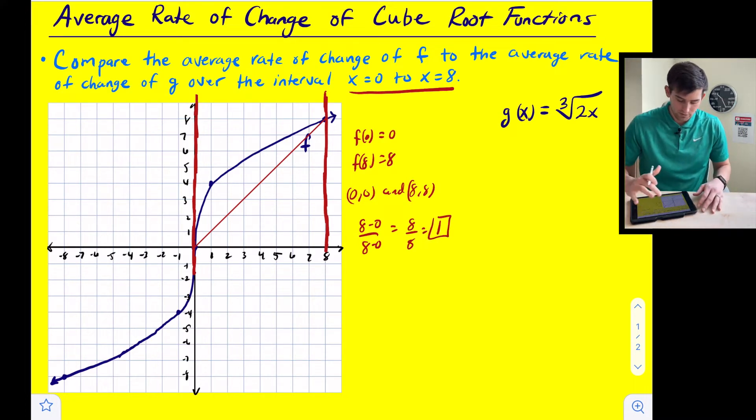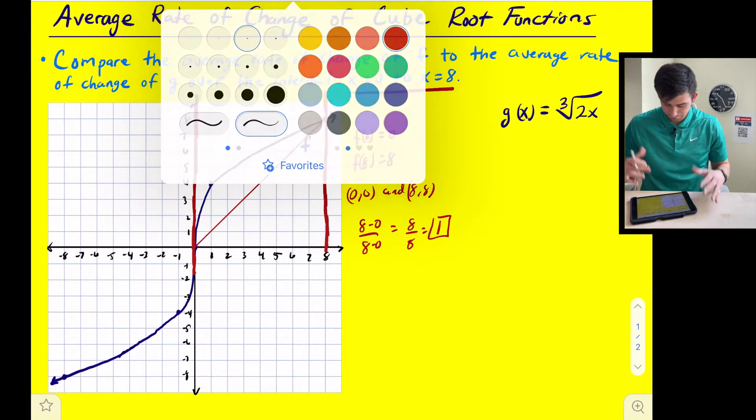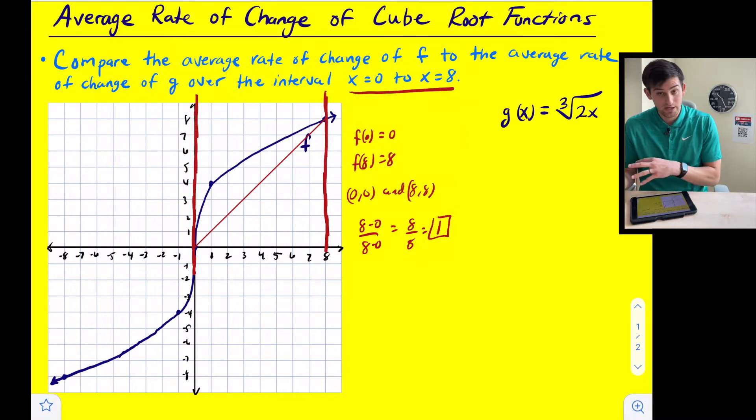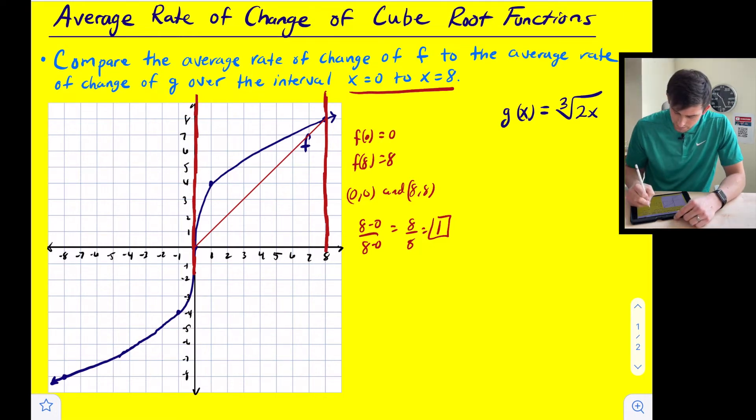Okay, so now we're going to do the same thing. But since we have an equation, we're not going to look at the graph, we're just going to plug in 0 and 8 for x and solve. So the first one we're going to do is g of 0. So that's the cube root of 2 times 0. And 2 times 0 would be 0. The cube root of 0 is 0.